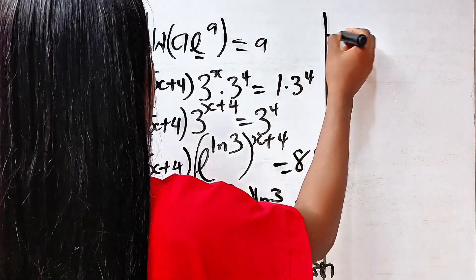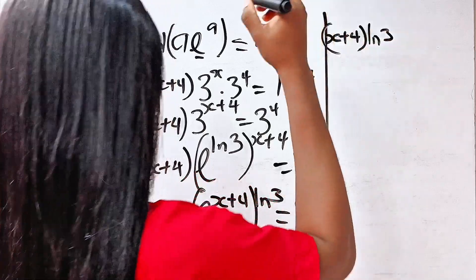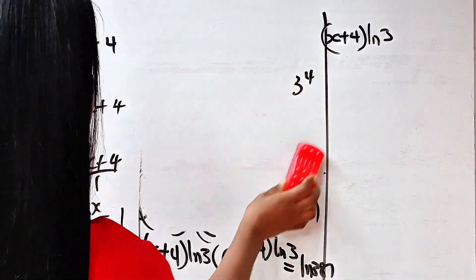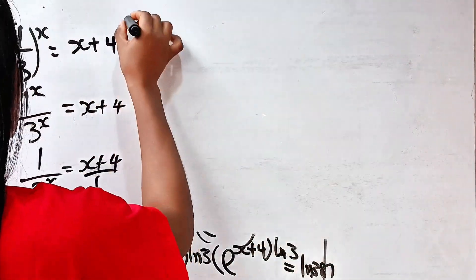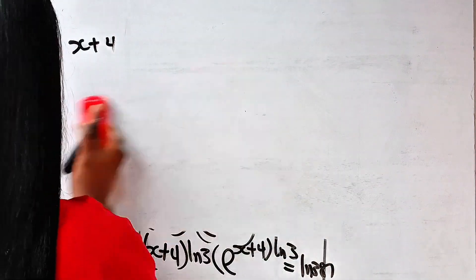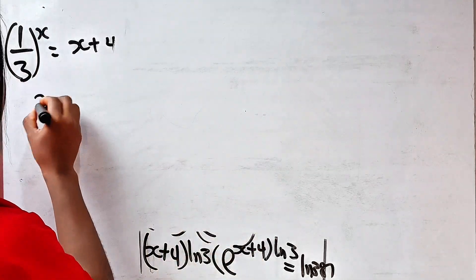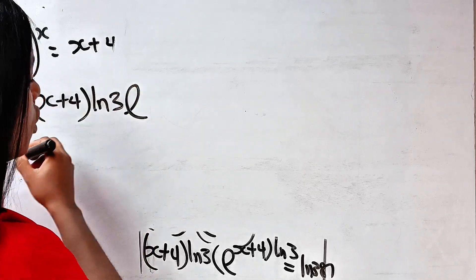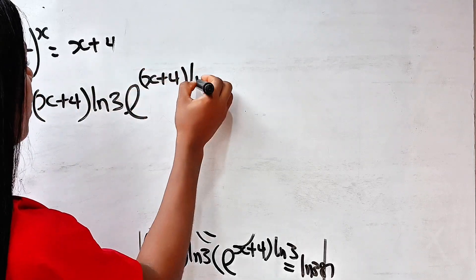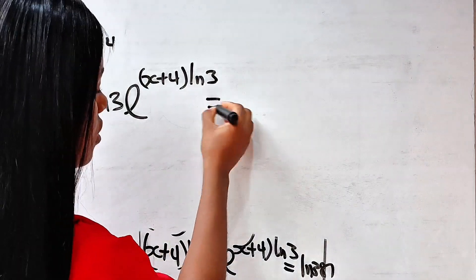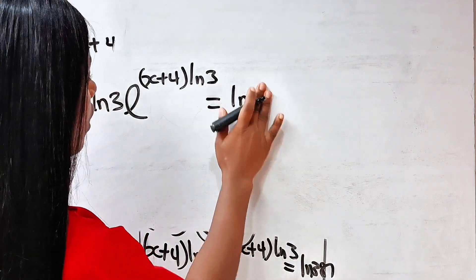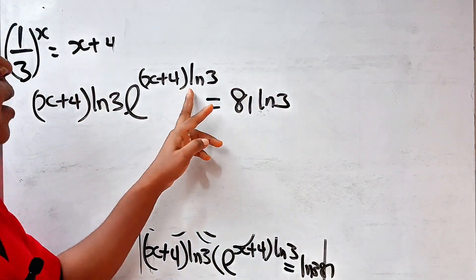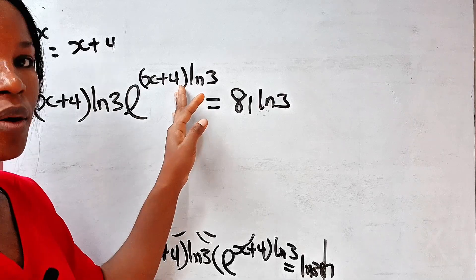So what we have is (x + 4)·ln 3, times e to the power of (x + 4)·ln 3 as well, equal to ln 3 times 81. We multiplied both sides by ln 3 so that the coefficient and power are the same, which is the form required for the Lambert W function.